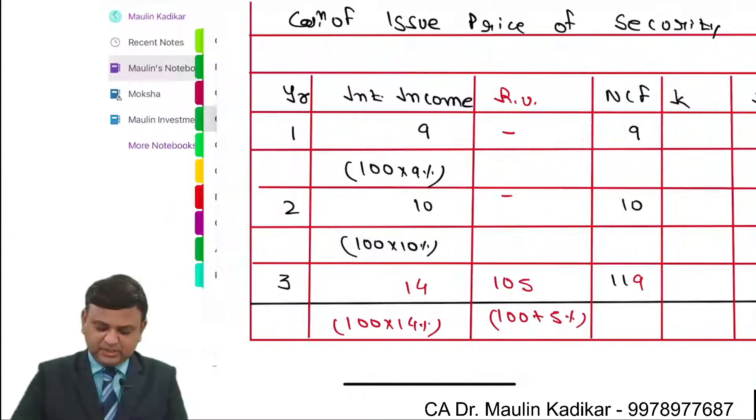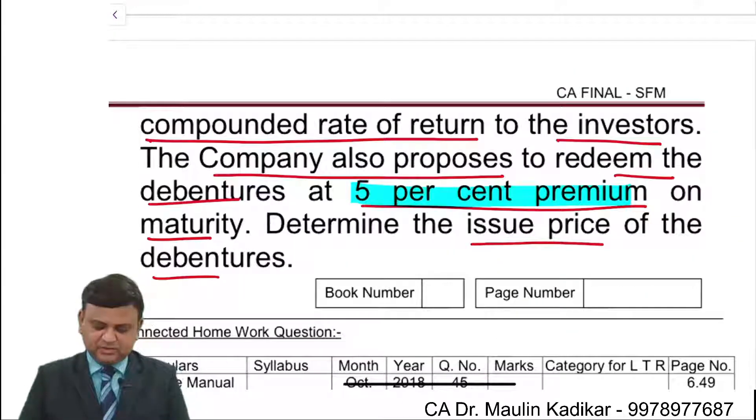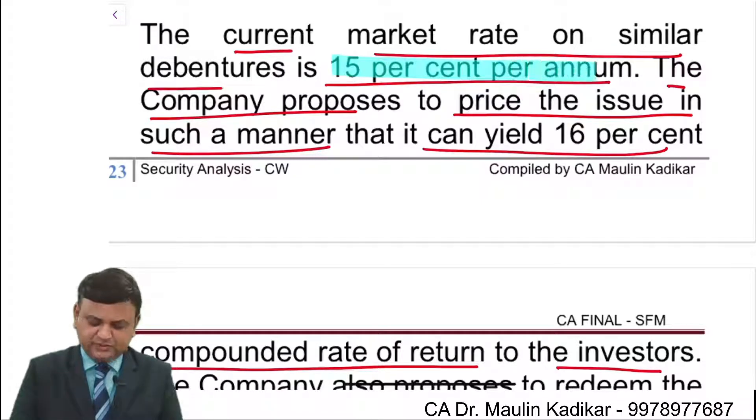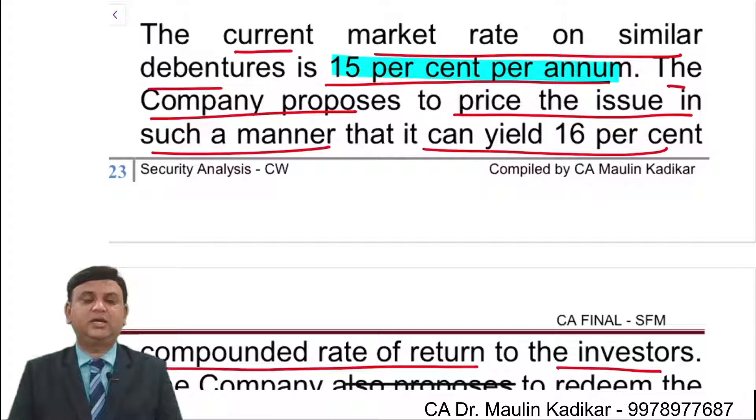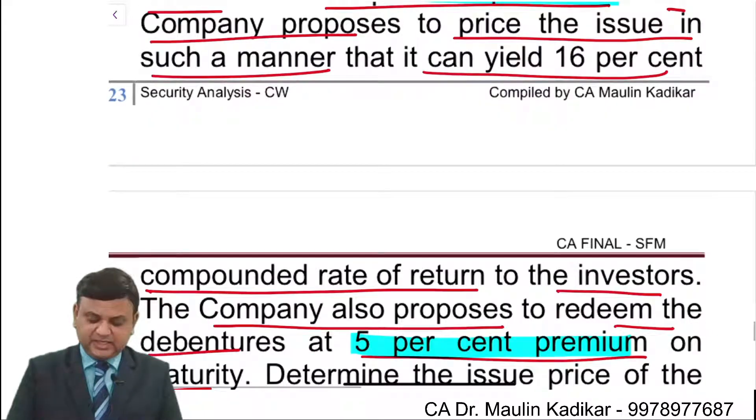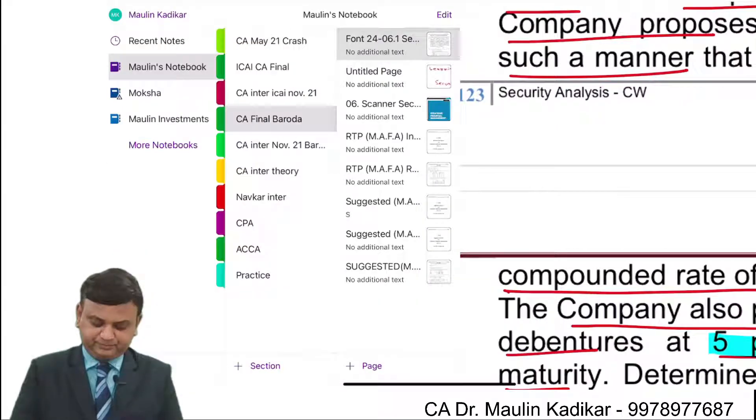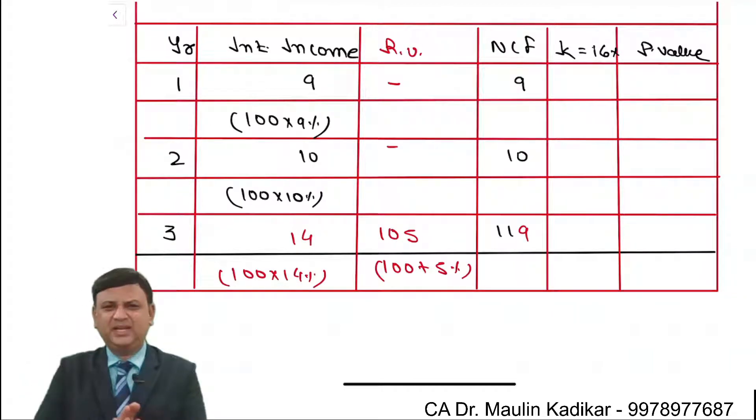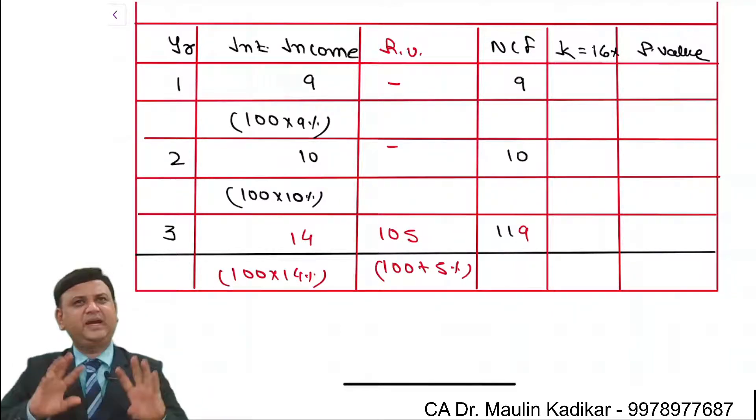Now importantly over here friends, we have to discuss the discounting factor. Question is providing the information that generally for these kind of securities, investors are having expectation of 15%. However, we want to make sure that the investors are getting return of 16%. So we are required to discount this cash flow series at the rate of 16% to compute the price. Now let us have a discussion that why like this.